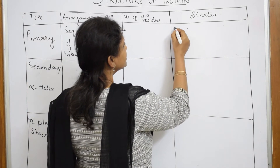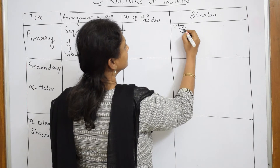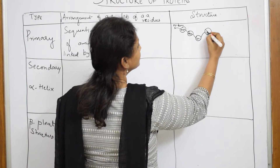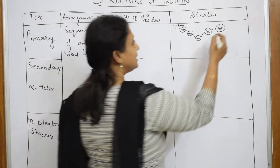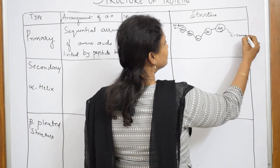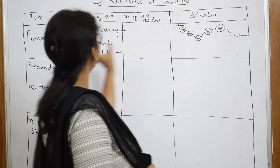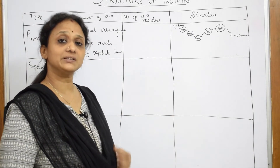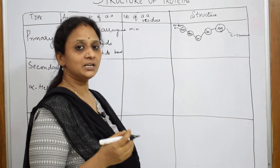Starting from the N terminus, we have amino acids such as methionine, alanine, leucine, isoleucine, and arginine linked one after the other in a sequence, ending at the C terminus. Between each pair there is a peptide bond, forming a sequential arrangement — that is the primary structure. The minimum number of amino acids in a protein chain is 50 residues.